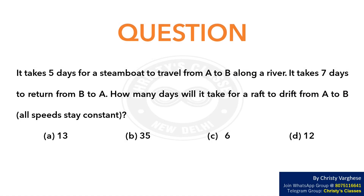In this video, let us find the time taken by a raft to move from one point to another. It takes five days for a steamboat to travel from A to B along a river, and seven days to return from B to A. How many days will it take for a raft to drift from A to B? Options: A) 13, B) 35, C) 6, and D) 12.